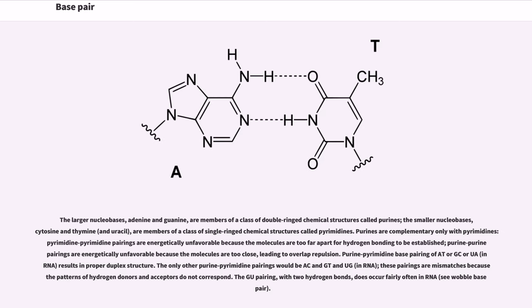The larger nucleobases, adenine and guanine, are members of a class of double-ringed chemical structures called purines. The smaller nucleobases—cytosine and thymine, and uracil—are members of a class of single-ringed chemical structures called pyrimidines. Purines are complementary only with pyrimidines. Pyrimidine-pyrimidine pairings are energetically unfavorable because the molecules are too far apart for hydrogen bonding to be established. Purine-purine pairings are energetically unfavorable because the molecules are too close, leading to overlap repulsion. Purine-pyrimidine base pairing of AT or GC (or UA in RNA) results in proper duplex structure. The only other purine-pyrimidine pairings would be AC and GT (and UG in RNA); these pairings are mismatches because the patterns of hydrogen donors and acceptors do not correspond. The GU pairing, with two hydrogen bonds, does occur fairly often in RNA.